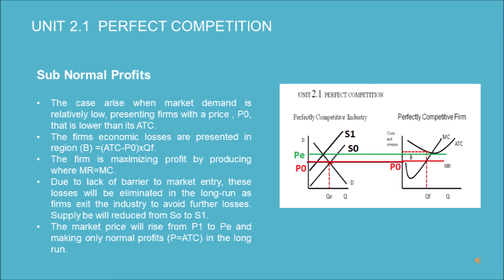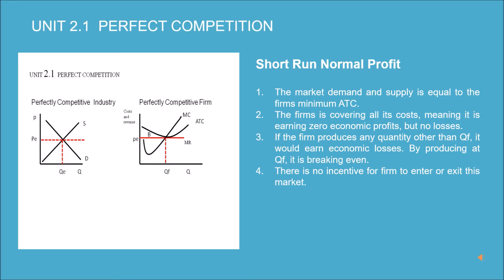As firms exit, supply will reduce from S0 to S1. The market price will rise from P1 to P_e, making only normal profits where P equals ATC in the long run. In the short run normal profit scenario, market demand and supply result in a price equal to the firm's minimum ATC. The firm is covering all its costs, meaning it is earning zero economic profits but no losses.